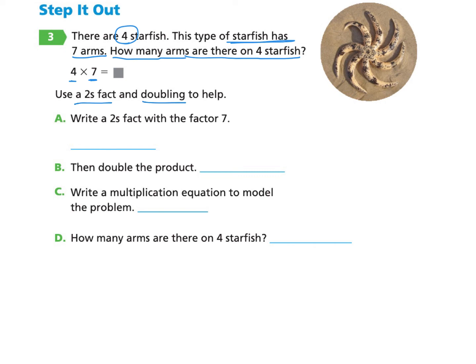The first part says to write a twos fact with a factor of seven. A twos fact means it's a multiplication problem that includes a two, and they give us the other factor of seven. So we write 2 × 7, and we can solve that: 2 × 7 = 14. This is a twos fact with the factor of seven.